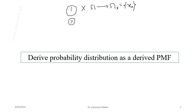We define Y as a function of X, writing Y = g(X), where g is a deterministic function of X. Since X is itself a function (a map), Y = g(X) represents a composition of functions — written using the composition notation g ∘ X.